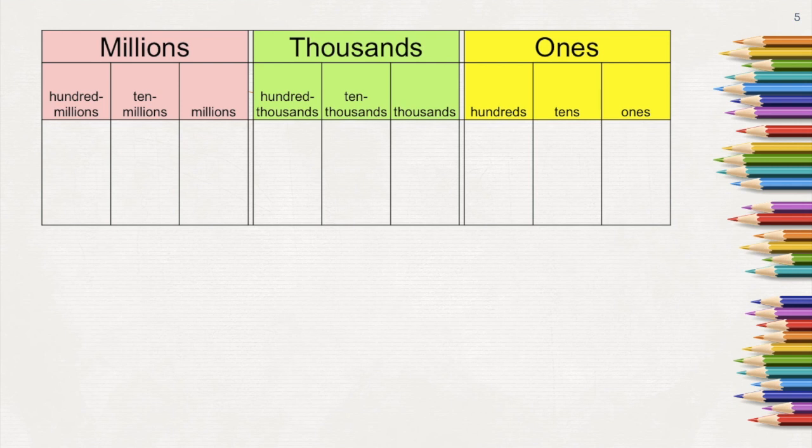This time, I'm going to place some number discs in our place value chart. One ten thousand, two ten thousands, three ten thousands, four ten thousands, five ten thousands, six ten thousands, seven ten thousands, eight ten thousands, nine ten thousands, and ten ten thousands. Do you know what is it equal to? 10 ten thousands is equal to 100,000 and it can be written like this.